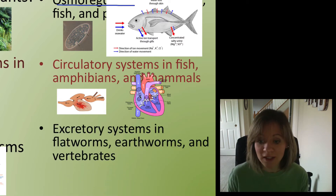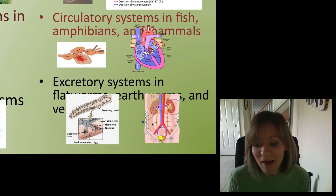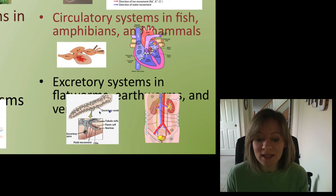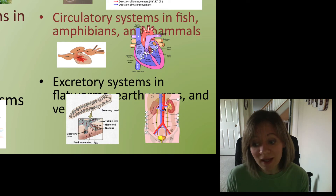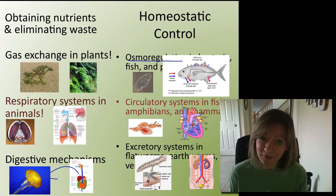We'll take a closer look at that. And then excretory systems in flatworms, earthworms, and vertebrates — having to get rid of waste. You notice this highly developed system of tubes and canals, and similarly we have lots of tubes and canals in our kidney, which we call nephrons, eventually leading out to a single opening — very similar, which is kind of strange.